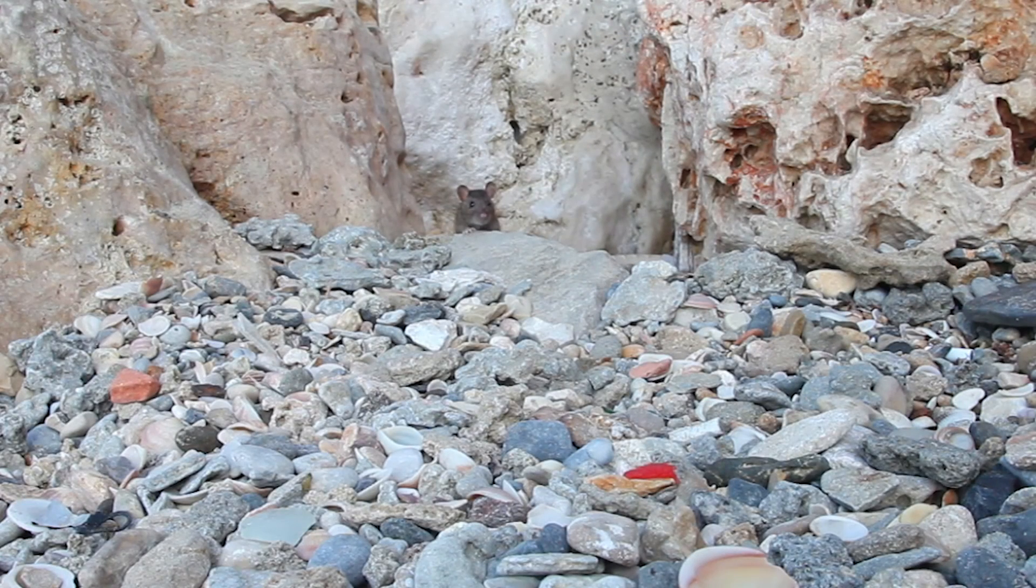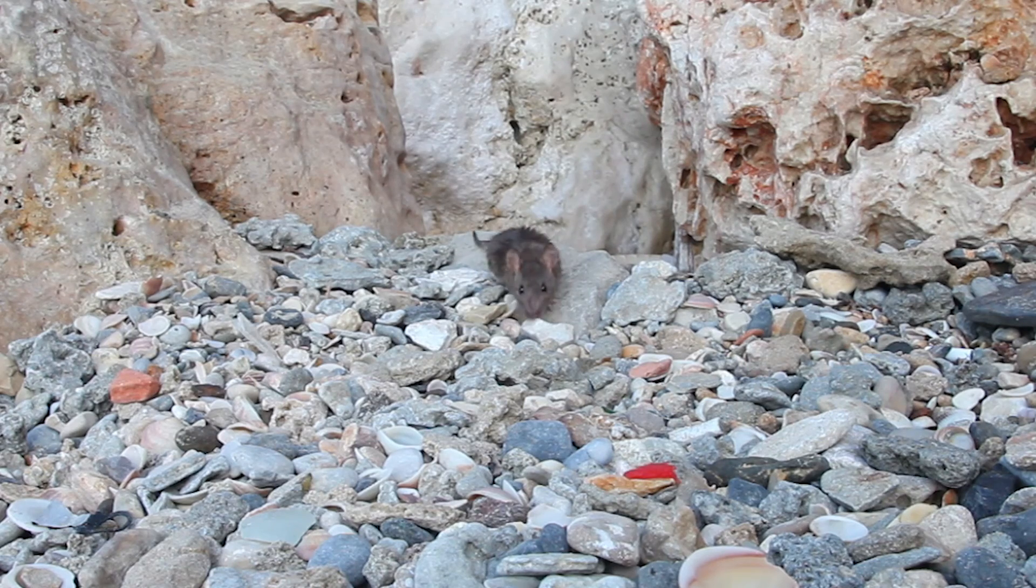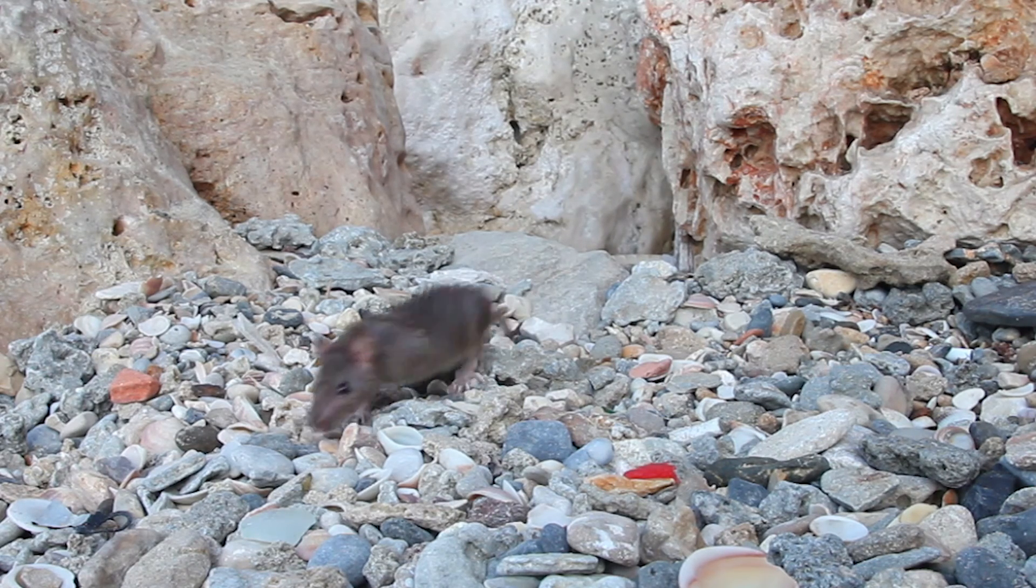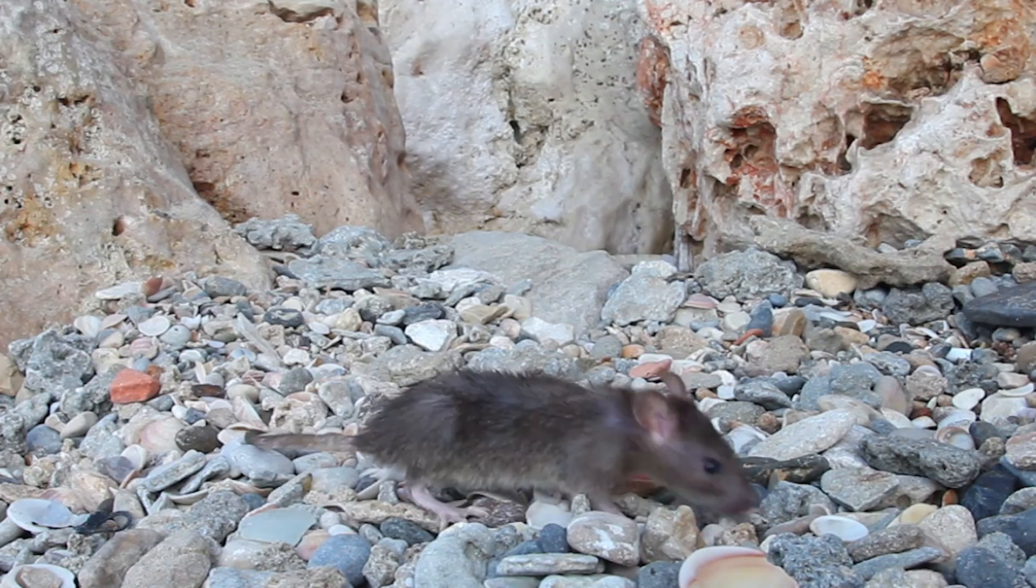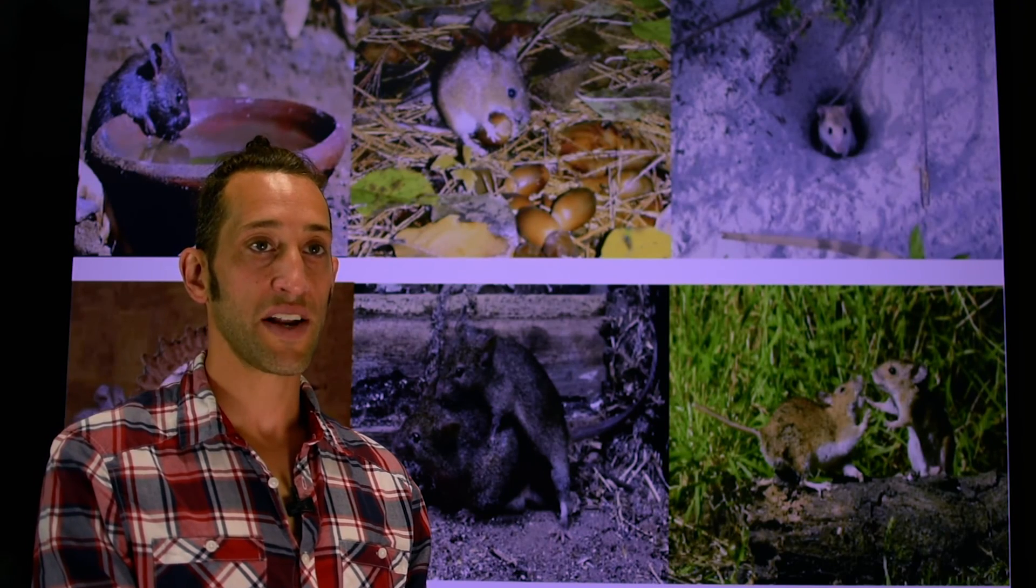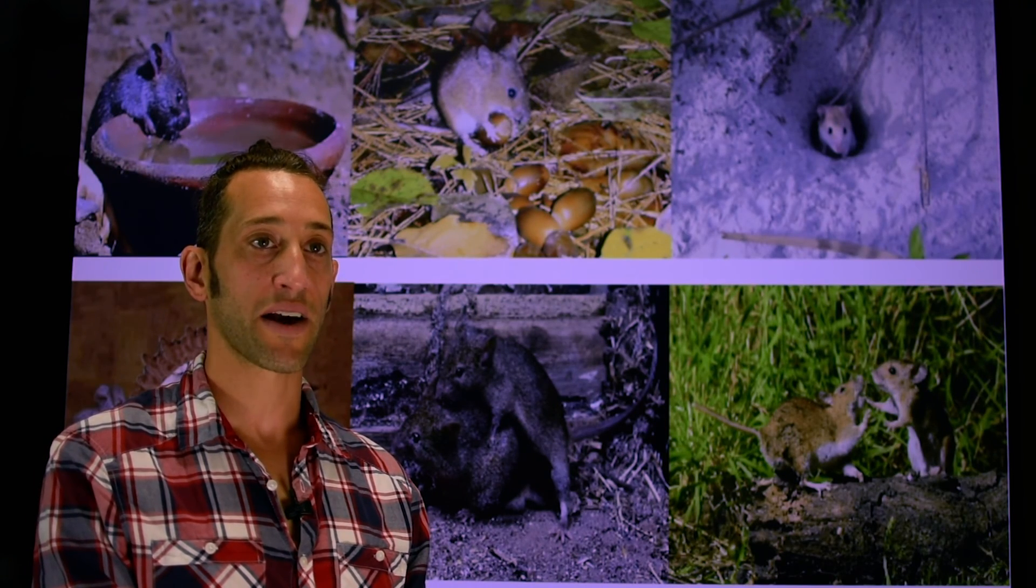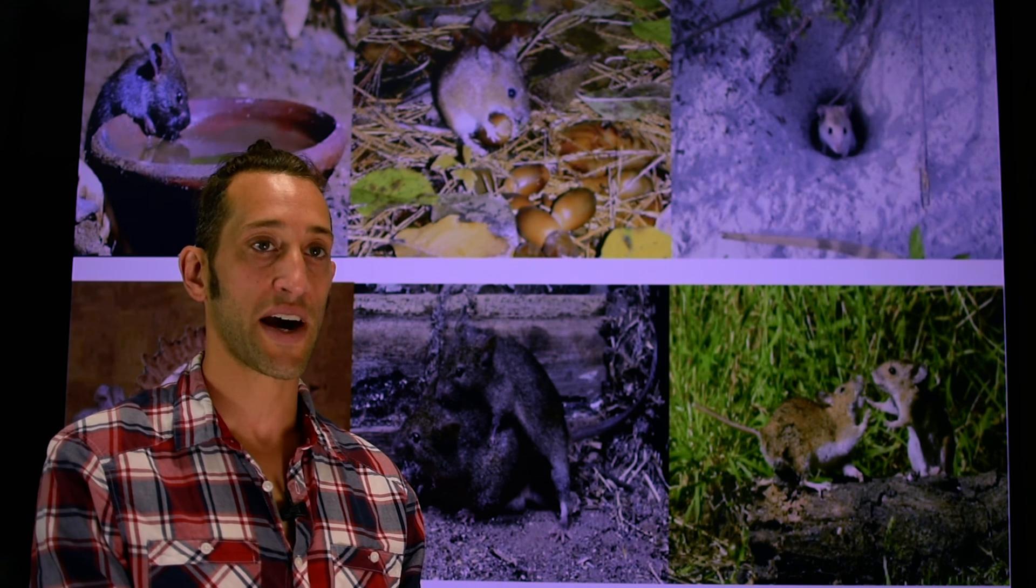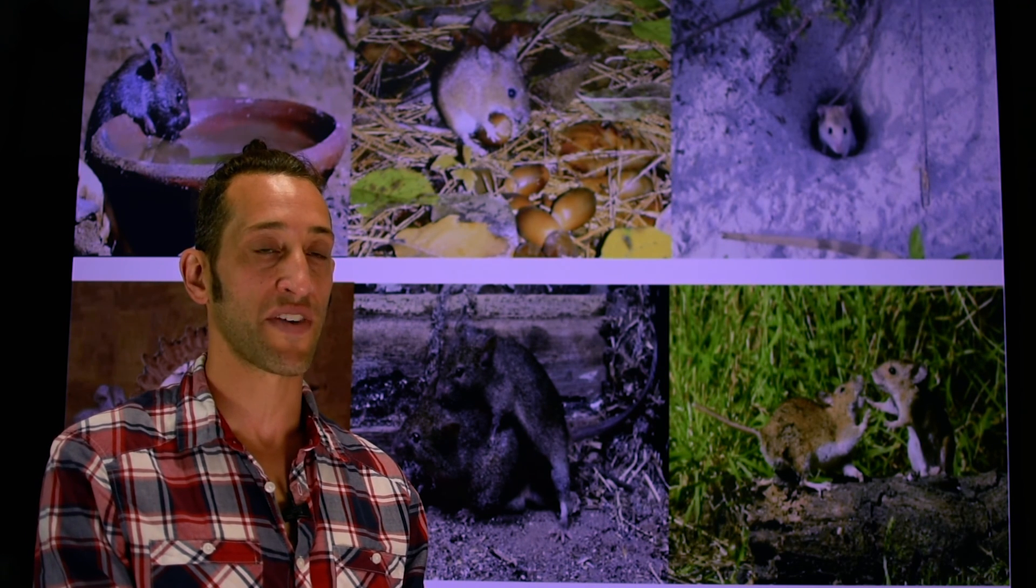In summary, hunger has the capacity to strongly influence other non-feeding behaviors, and these changes can be recapitulated by simply switching on a couple thousand hypothalamic neurons. When we're hungry, the desire to defend our home, protect ourselves from attack, or to finally approach that person we've had our eye on may not be as important as finding food.